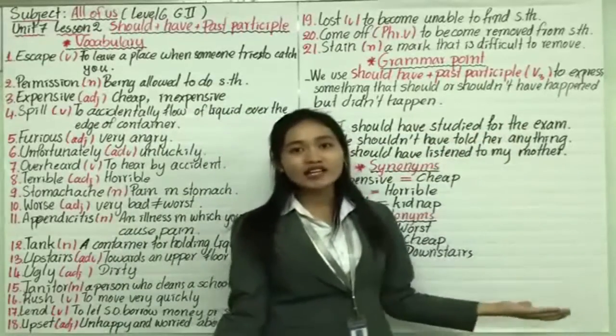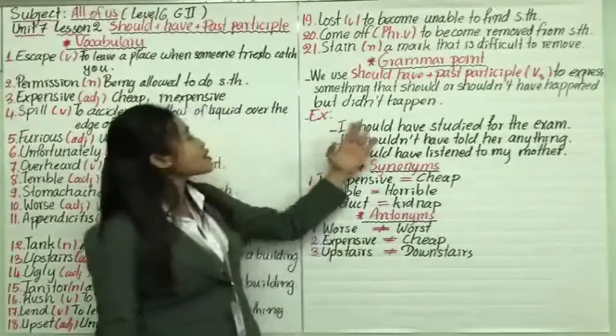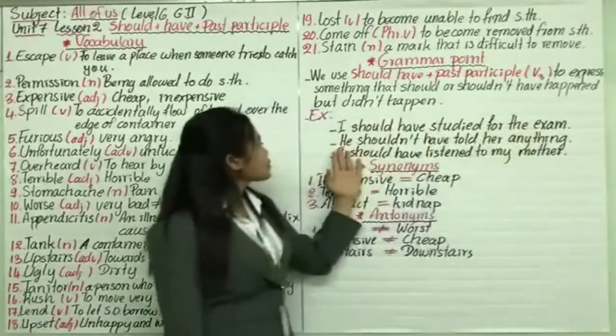For example, I should have studied for the exam. But actually, I didn't study anything for my exam. So I failed the exam. So I feel regret, and then I say I should have studied for my exam.